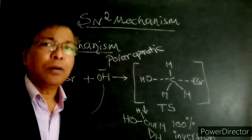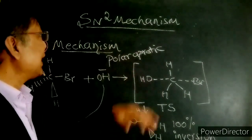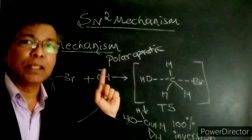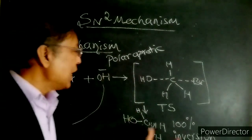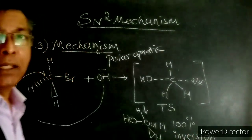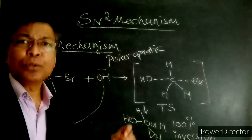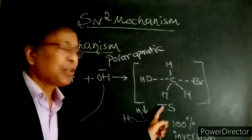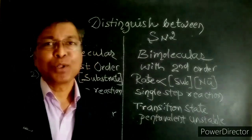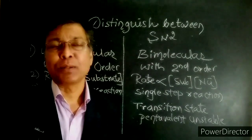Key points to remember about SN2 mechanism: SN2 reaction takes place in a single step, we get 100% inversion product, and SN2 reaction passes through an intermediate called the transition state.